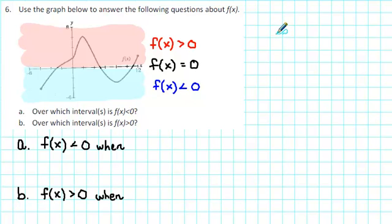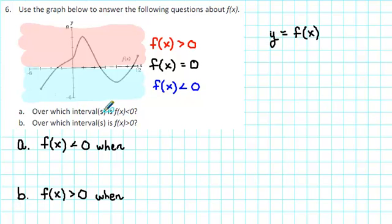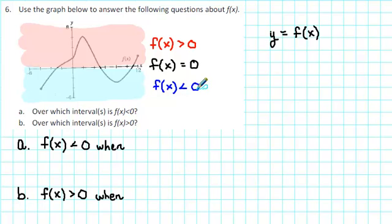First of all, recall that when we're working with function notation, we have y is equal to f of x. So when we see f of x, we can think of y instead. Over which intervals is f of x less than 0? Well, we can think of that as: over which intervals is y less than 0? Where are the y values less than 0? On a graph, the y values are less than 0 below the x-axis. So when we see f of x is less than 0, we want to be thinking below the x-axis.